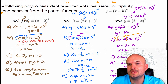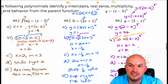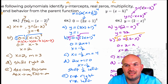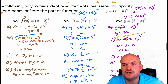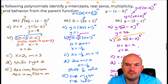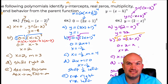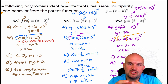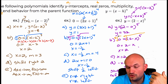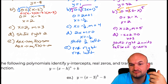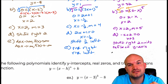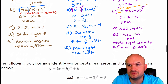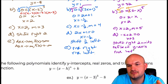Getting to the last point is identifying the end behavior. If we expand this out, we can see that any odd number of times we multiply that negative, the highest power — degree five — will be negative. So my leading coefficient is going to be negative and my degree is odd. Therefore, based on our end behavior rules, this graph is going to rise left and fall right.